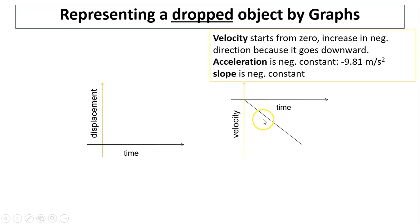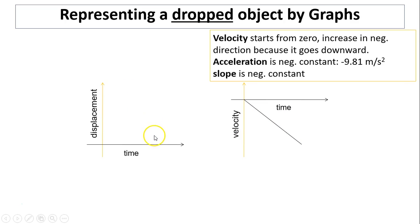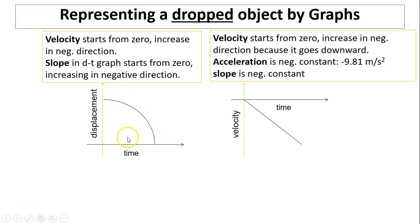In the displacement graph, you start from a height in order to drop it. Your slope should be negative because slope is velocity in a displacement versus time graph. The slope is not constant — it's increasing in the negative direction. So first it's kind of flat, getting steeper and steeper. Your velocity starts from zero, then becomes a little negative and more and more negative. That's the displacement versus time graph and the velocity versus time graph for a dropped object.